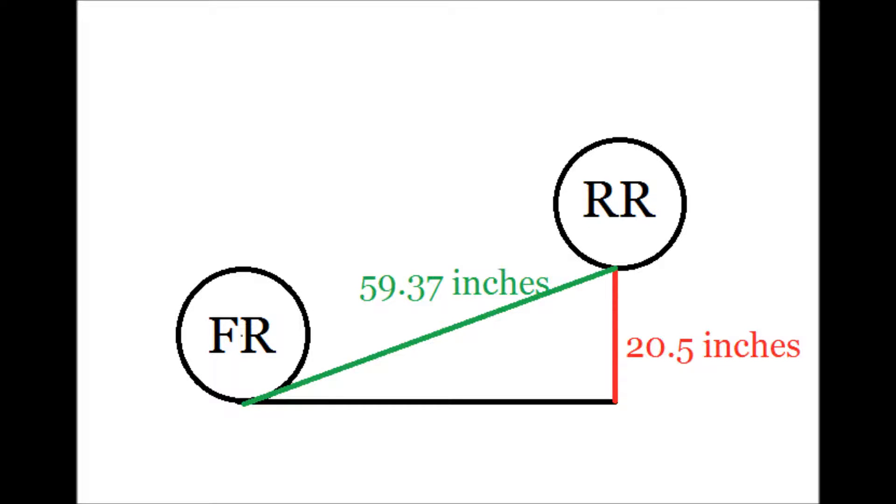For next step, you'll need to raise the back of the bike. I ended up raising my bike by 20.5 inches, marked as a red line. And the front wheel is marked with FR, the rear wheel is marked with RR. The wheelbase didn't change, it's still 59.37 inches, but the black line we still have to find it.